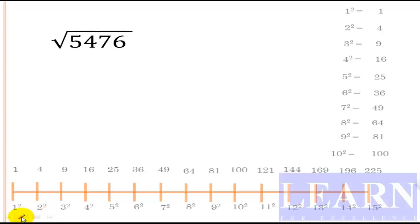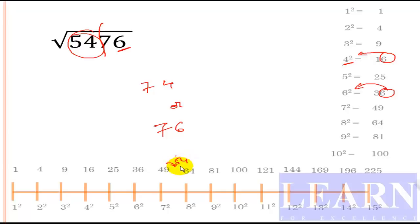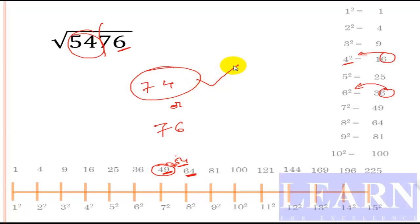The next number is 5476. The last digit is 6, so the square root can end with 4 or 6. The first part is 54, which is greater than 49 (that is 7 squared), so the answer is either 74 or 76. Now check: is 54 closer to 49 or to 64? It is closer to 49, so we take the smaller value.